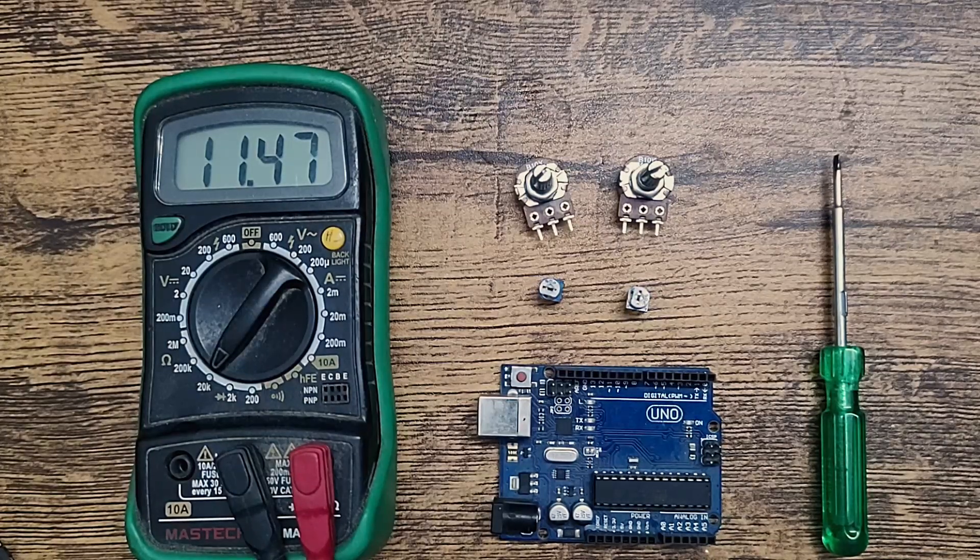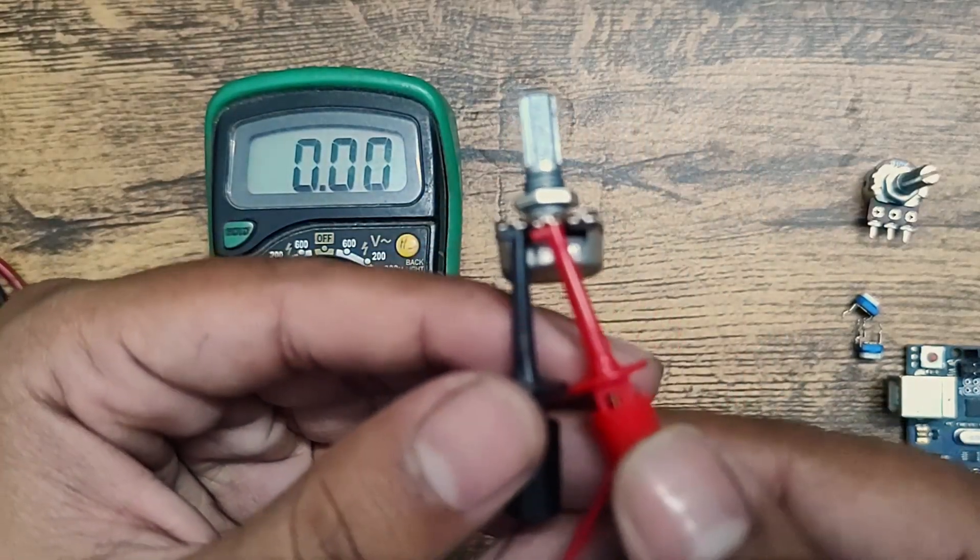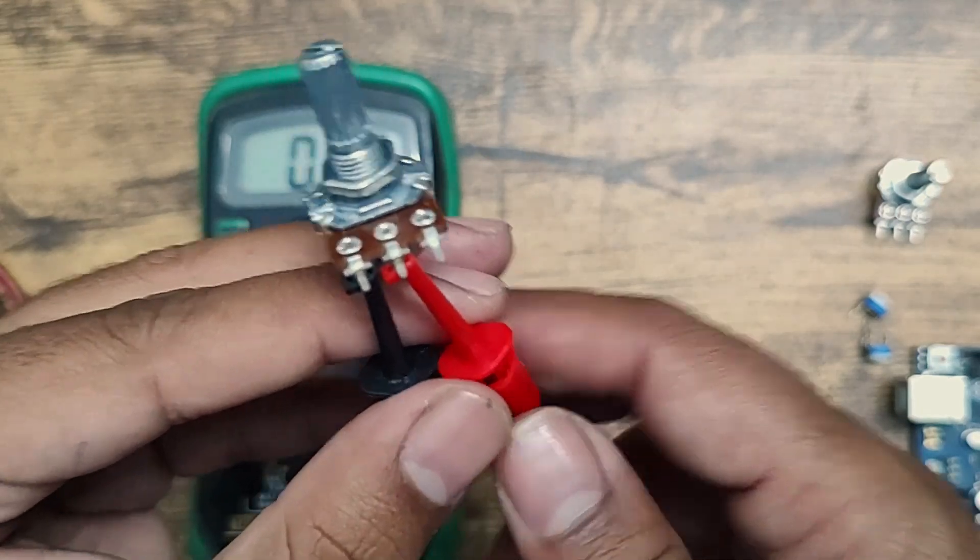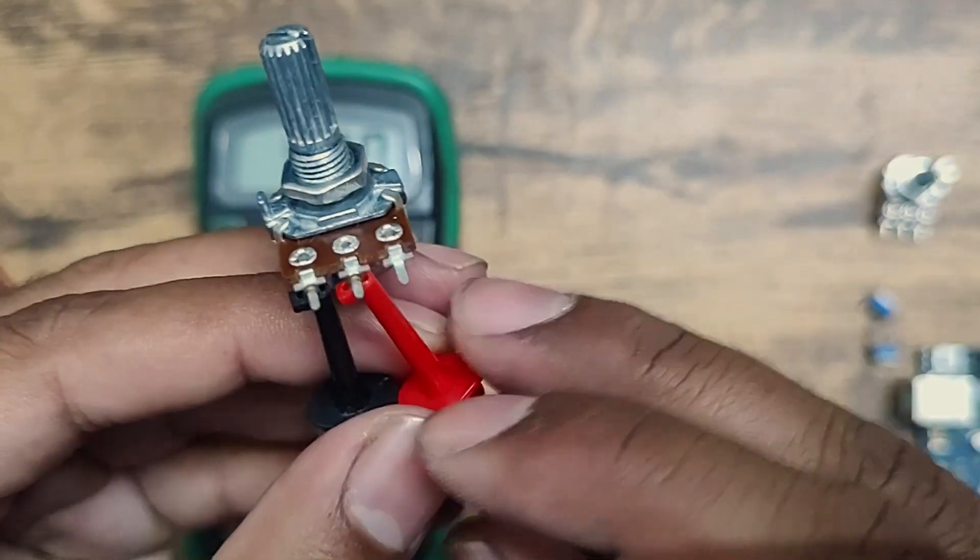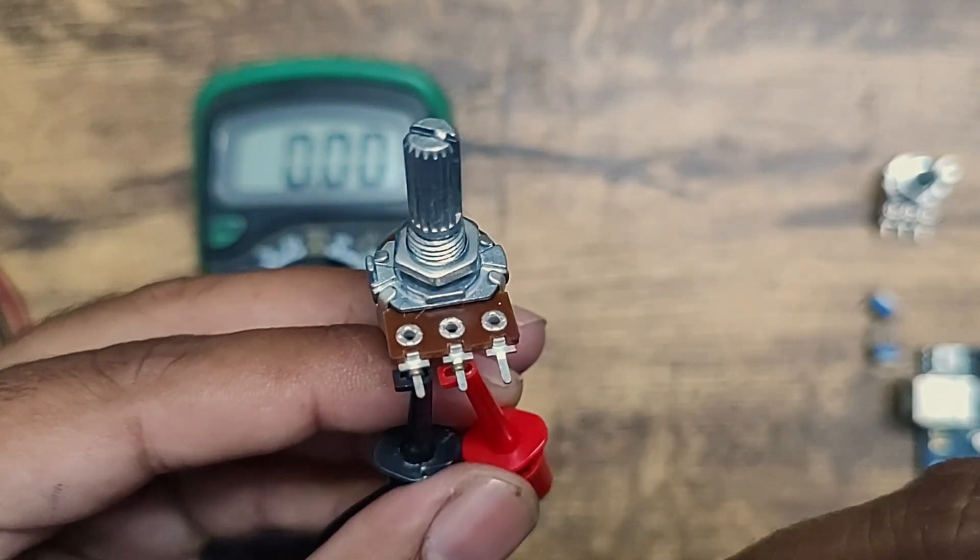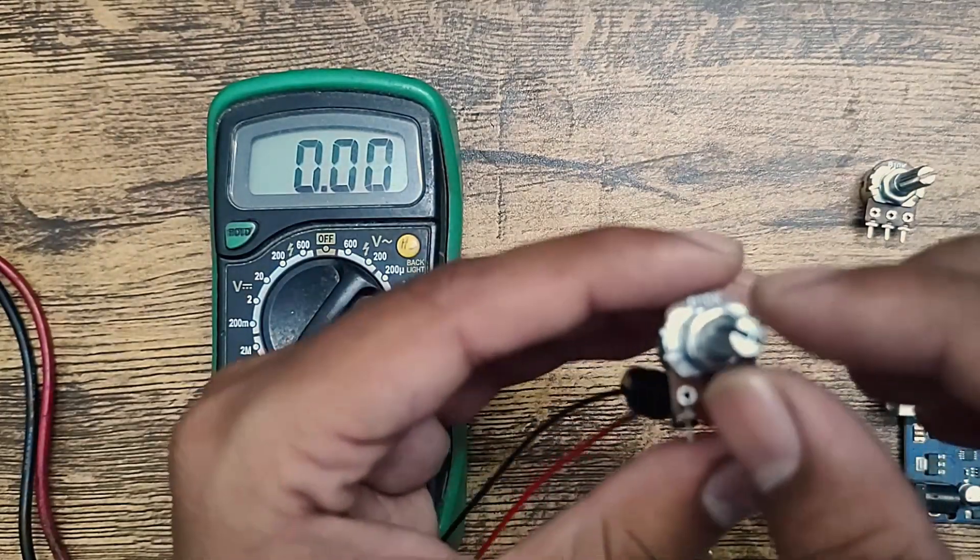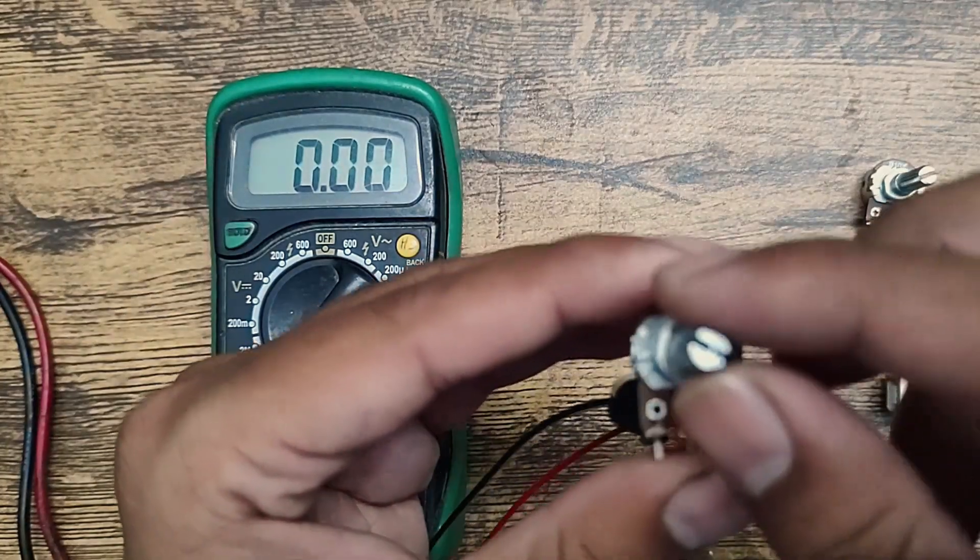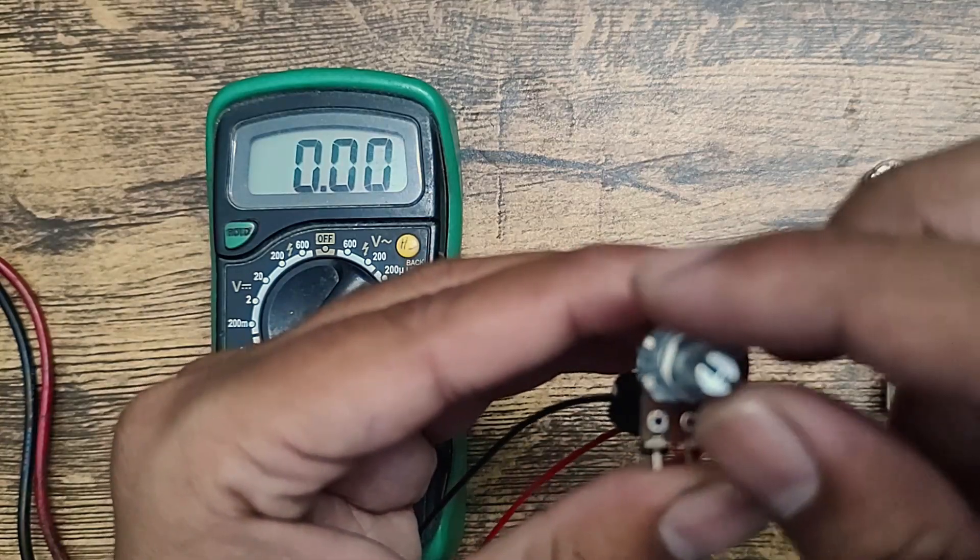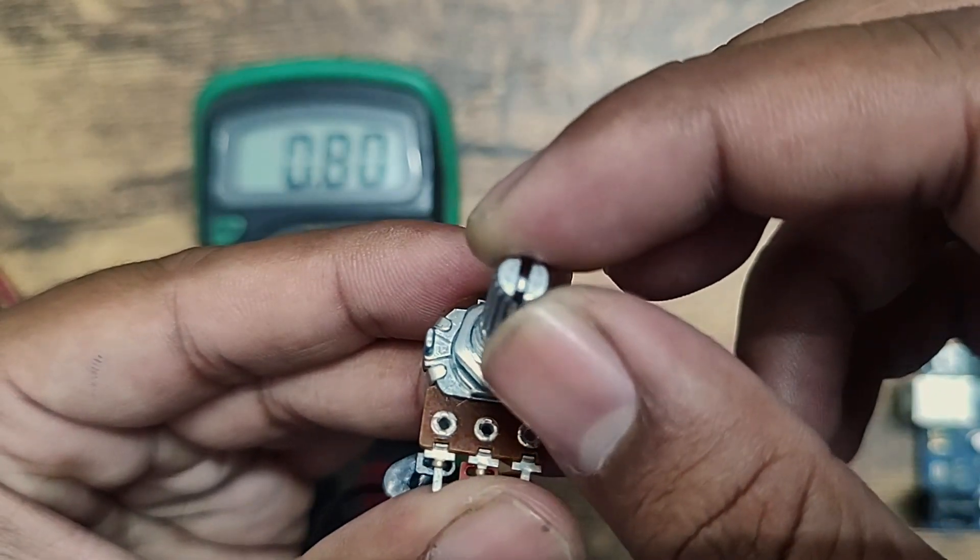I have the multimeter, so I have connected the two leads from multimeter to the potentiometer. Black one is on the first pin and the second pin I have connected red. The second pin is the variable output. So you can see in the multimeter it is zero K, zero resistance. Then I will turn it, I will rotate it in the clockwise direction to increase the resistance. You can see I'm increasing it.